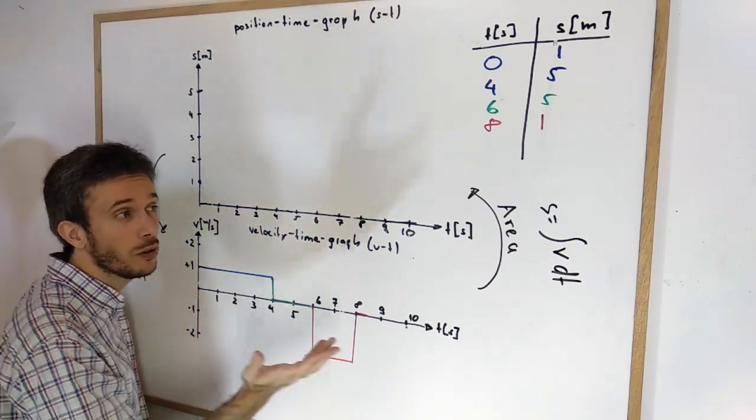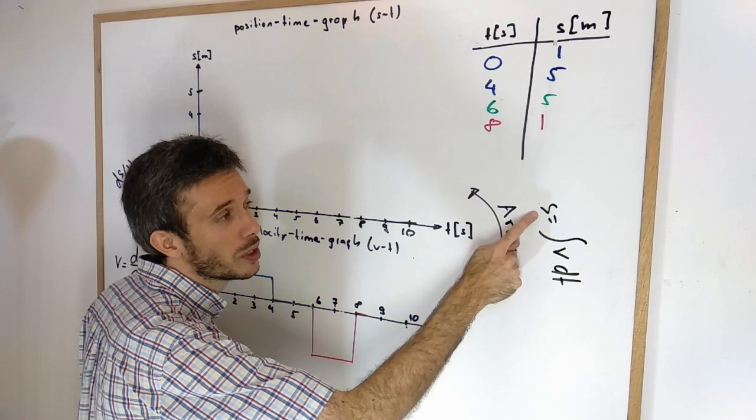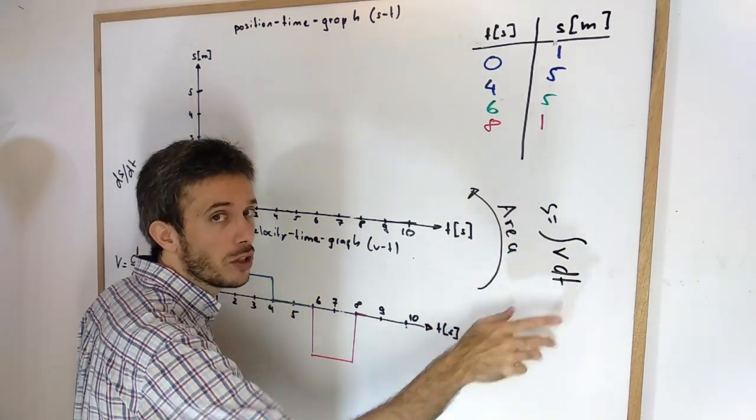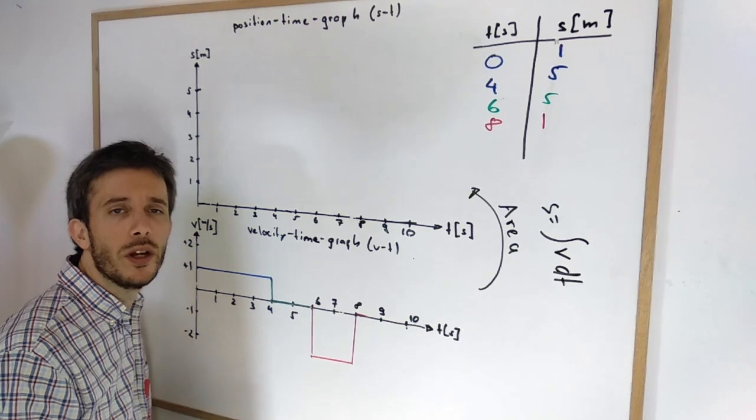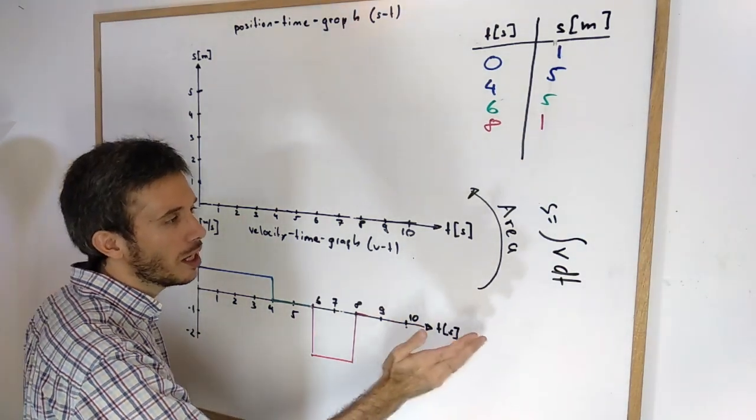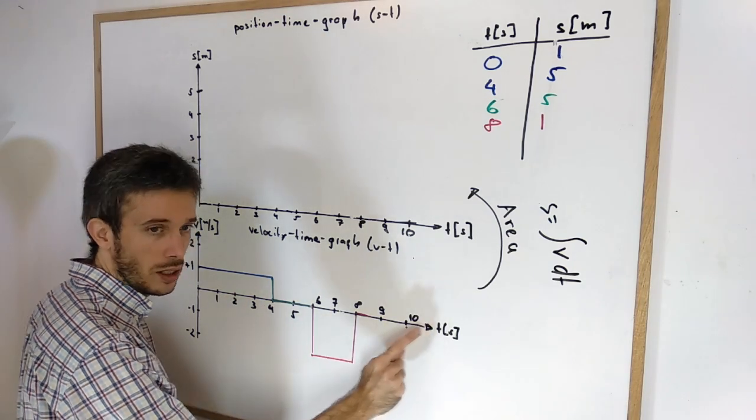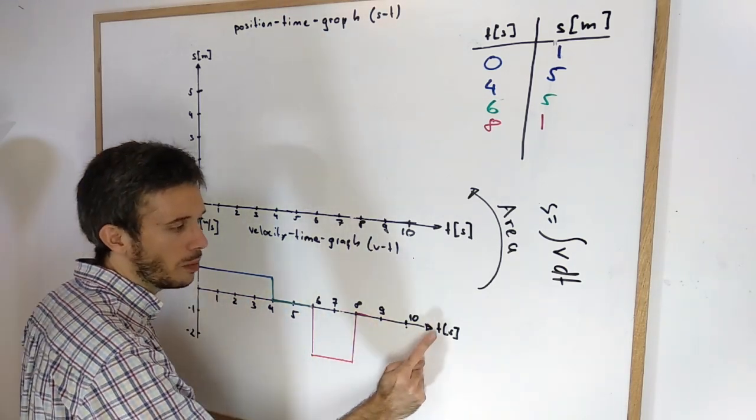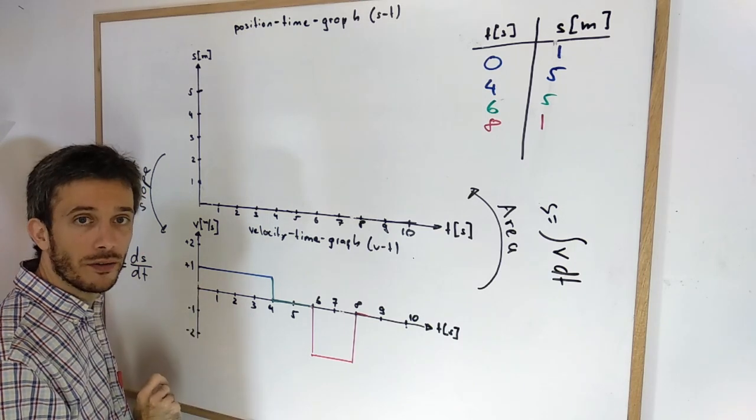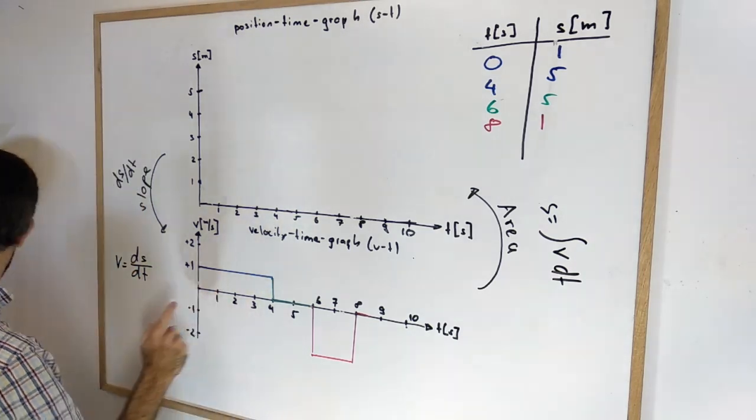It's integration. So those of you that know calculus, the position as a function of time is the integration of the velocity as a function of time. Now those that didn't take calculus yet, this corresponds to the area between the x-axis, which is the time axis in our VT graph and the graph itself.